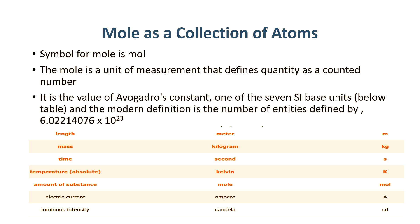It is the value of Avogadro's constant and one of the seven SI base units shown in the table. The modern definition is the number of entities defined by 6.02214076 times 10 to the 23rd. One mole, abbreviated as mol, is a very large number. When written out, it looks like this: 602,000,000,000,000,000,000,000.